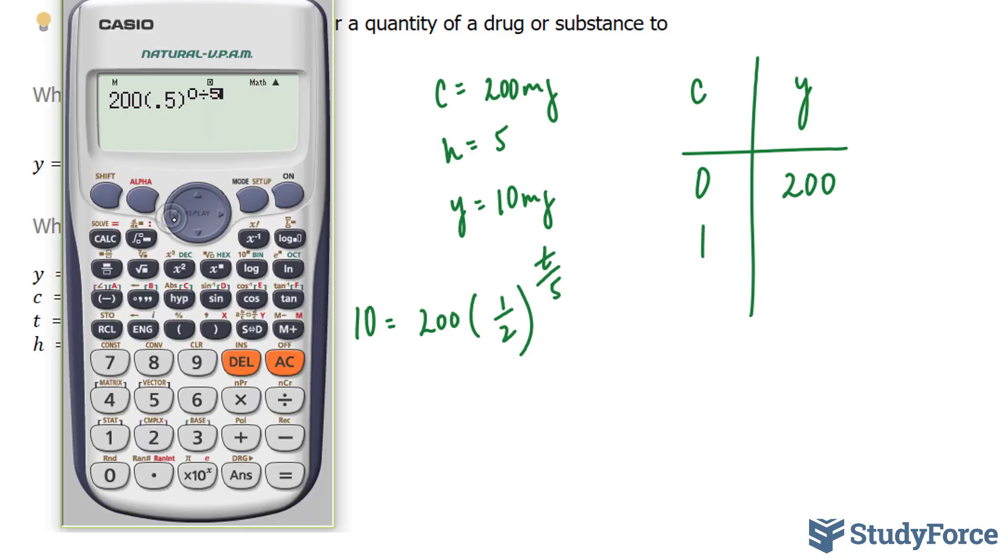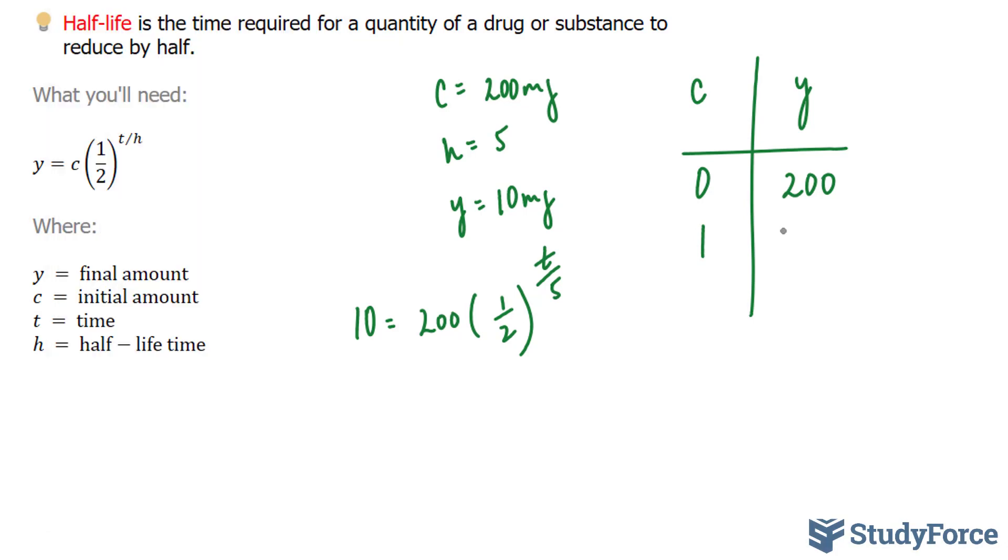So what I'll do next is plug in 1 in place of that 0, and I end up with 174 approximately. So after one hour, caffeine goes from being 200 milligrams to 174. I'm just going to write down mg here and hr for clarity.